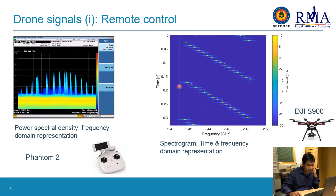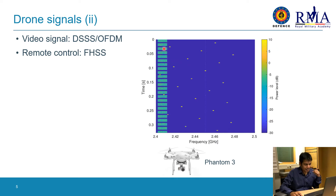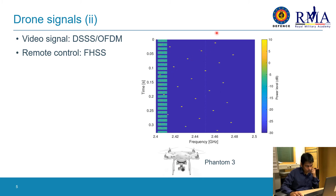Here, one cycle ends and the second cycle starts. This representation is also called a spectrogram image. This is another example of a signal from the Phantom 3 drone. Here you see the video signal, which is a direct sequence spread spectrum or OFDM type of signal, and here you see the remote control signal, which is frequency hopping spread spectrum, as explained before.